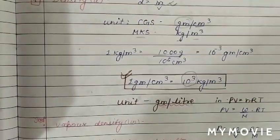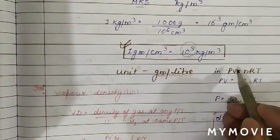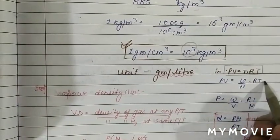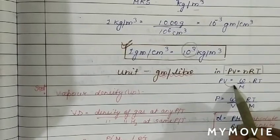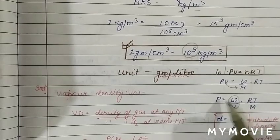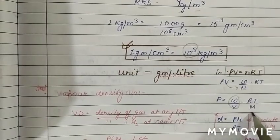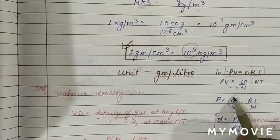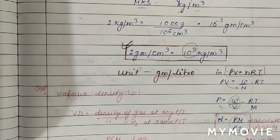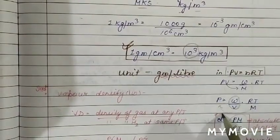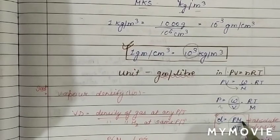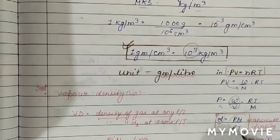Using the ideal gas equation PV = nRT, we can derive the density relation. Substituting n = (mass/molar mass M) gives PV = (w/M)RT. Rearranging, w/V = PM/RT, and since w/V is density d, we get d = PM/RT. This is the absolute density of an ideal gas, where P is pressure, M is molar mass, R is the gas constant, and T is temperature in Kelvin.